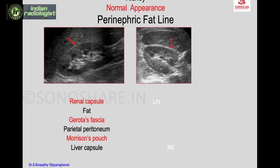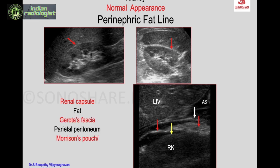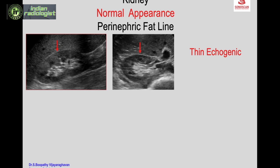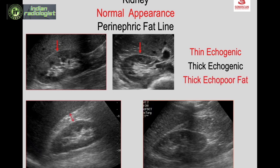The perinephric fat line may not be distinguishable in a normal patient, but when there is abnormality or fluid collection, the layers are seen separately: the renal capsule, perinephric pad of fat, Gerota's fascia, parietal peritoneum, Morrison's pouch with fluid in ascites, and the liver capsule — all made out in a case of viral hemorrhagic fever with fluid between the layers. The perinephric fat line is usually thin and echogenic, but can also appear thick and echo-poor depending on the fat's fibrous tissue content.